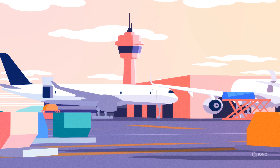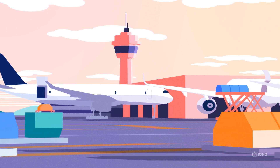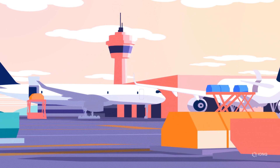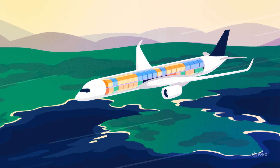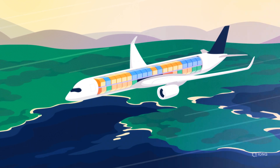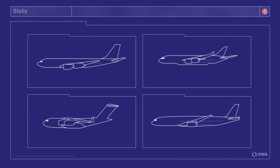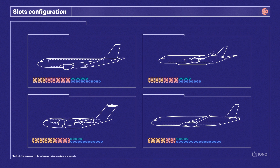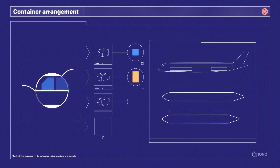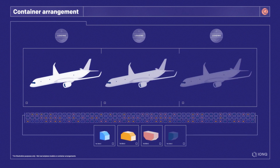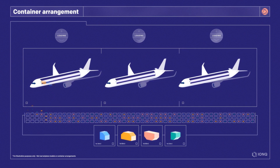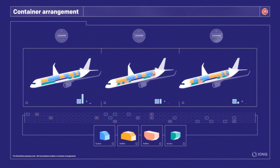Loading cargo optimally onto airplanes is a complex, time-consuming and financially impactful challenge. Cargo planes transport containers that hold packages. These containers fit into specific slots of various sizes throughout the plane, and each plane model has different slots that can hold multiple types of containers. Airline carriers must fit as much cargo as possible within certain operational constraints. Matching containers with slots affects the weight distribution on each plane and therefore the stability, fuel consumption and ultimately transportation costs.